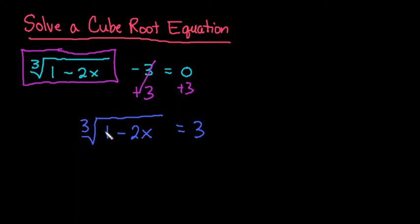To get rid of the radical, if it's a square root you square, if it's a cube root you cube, if it's a fourth root you take it to the fourth power. Whatever this number is, the opposite of that would undo it. So we cube both sides.